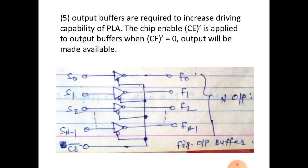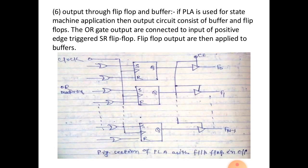Output buffers are required to increase device capability of PLA. The chip enable is applied to output buffer. When CE complement equals 0, output will be made available.